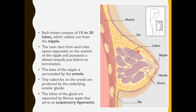Each breast consists of 15 to 20 lobes which radiate out from the nipple. The main duct from each lobe opens separately on the summit of the nipple, and each duct possesses a dilated ampulla just before its termination. The base of the nipple is surrounded by the areola, and tiny tubercles on the areola are produced by the underlying areolar glands.